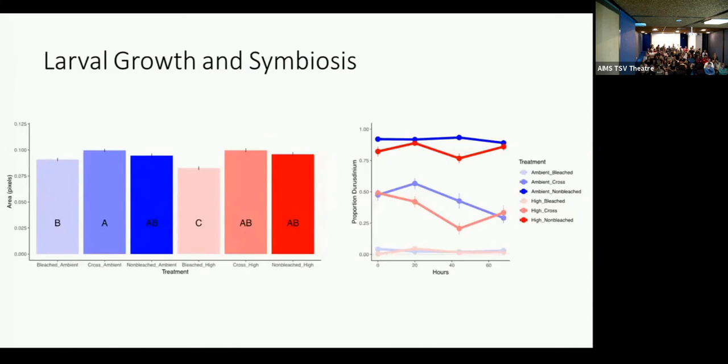But this doesn't really appear to be due to the symbiotic community. So I mentioned before that most of the bleached corals are only Cladocopium. Most of the non-bleached corals are a combination, but were dominated by Durusdinium. And that's what we see here. So on the y-axis, we have a proportion of Durusdinium. On the x-axis, we have time.